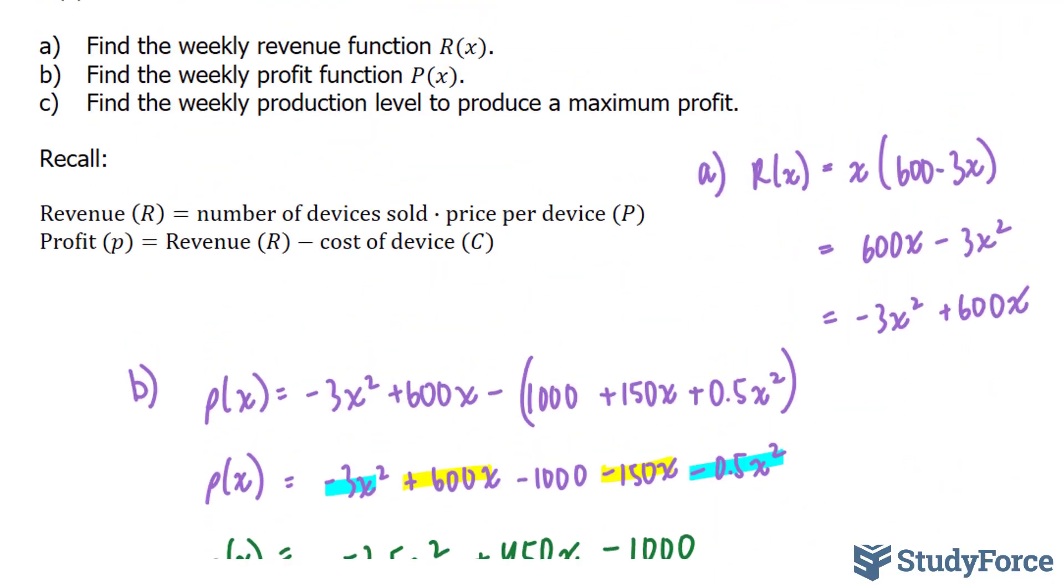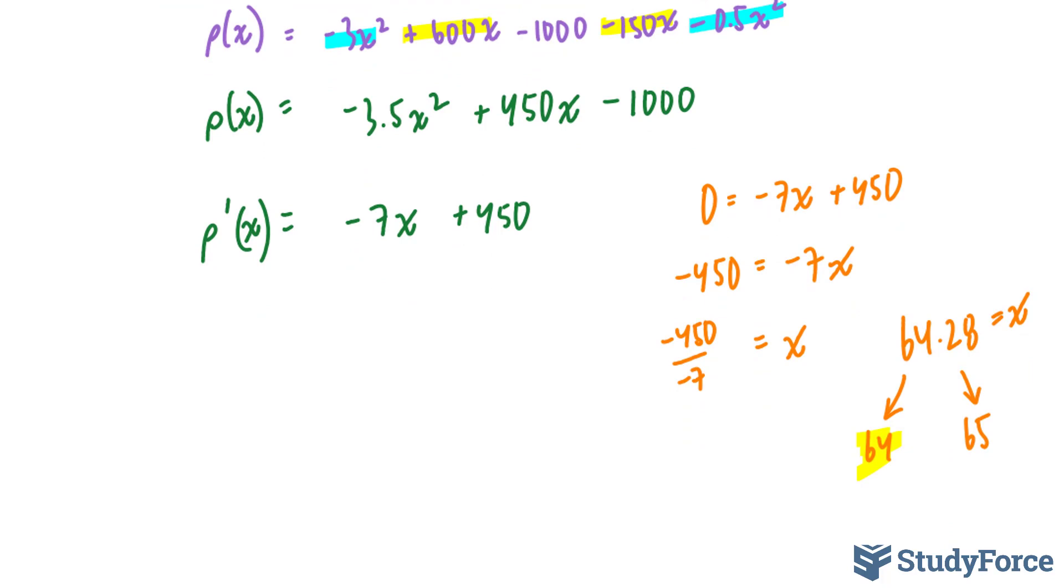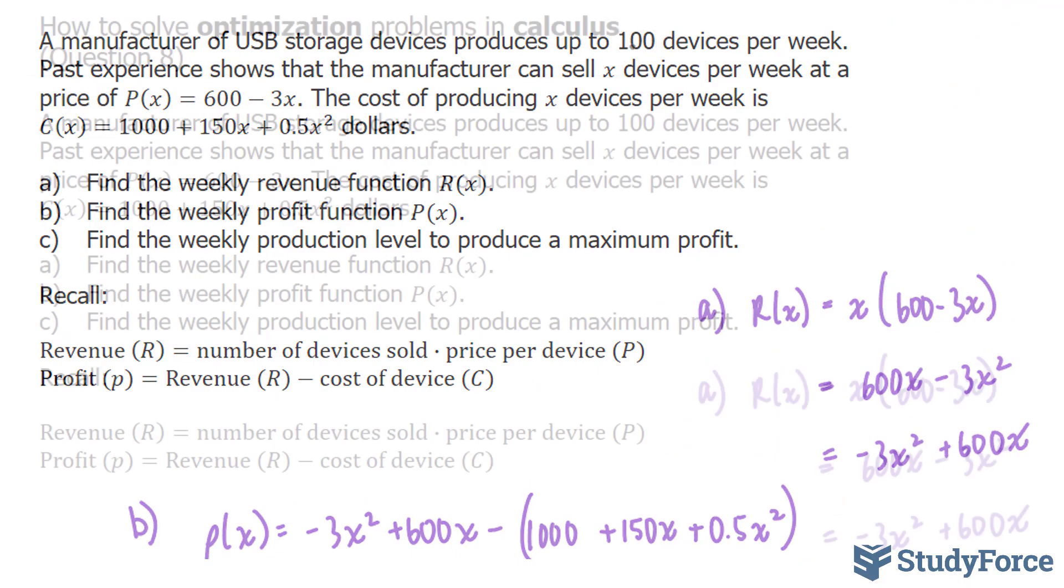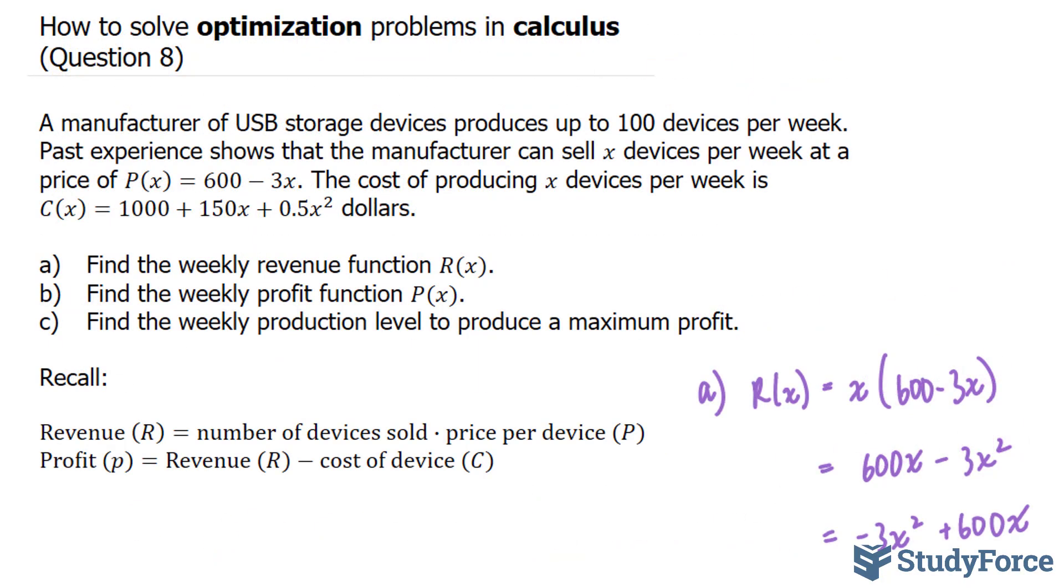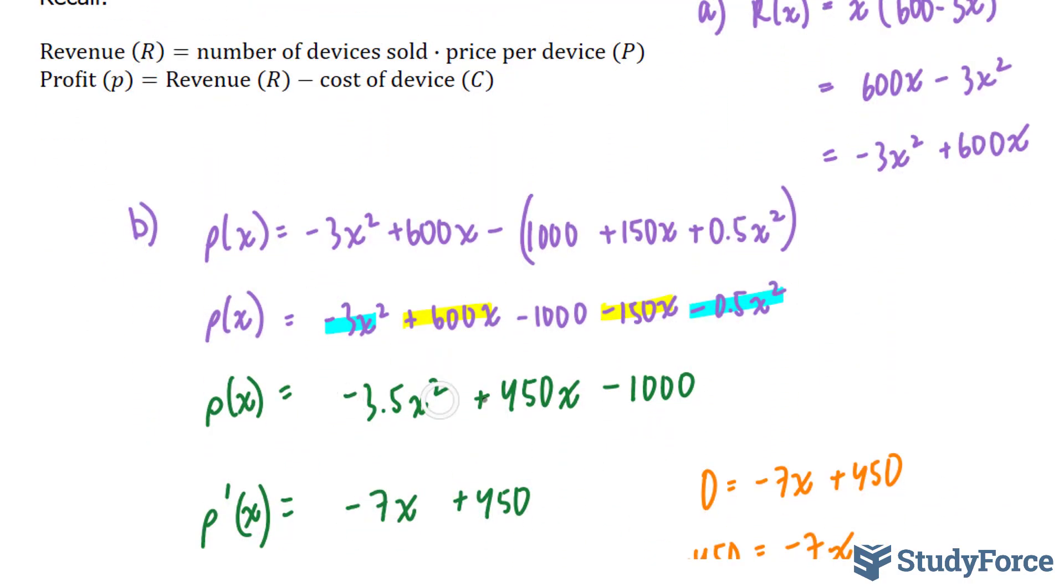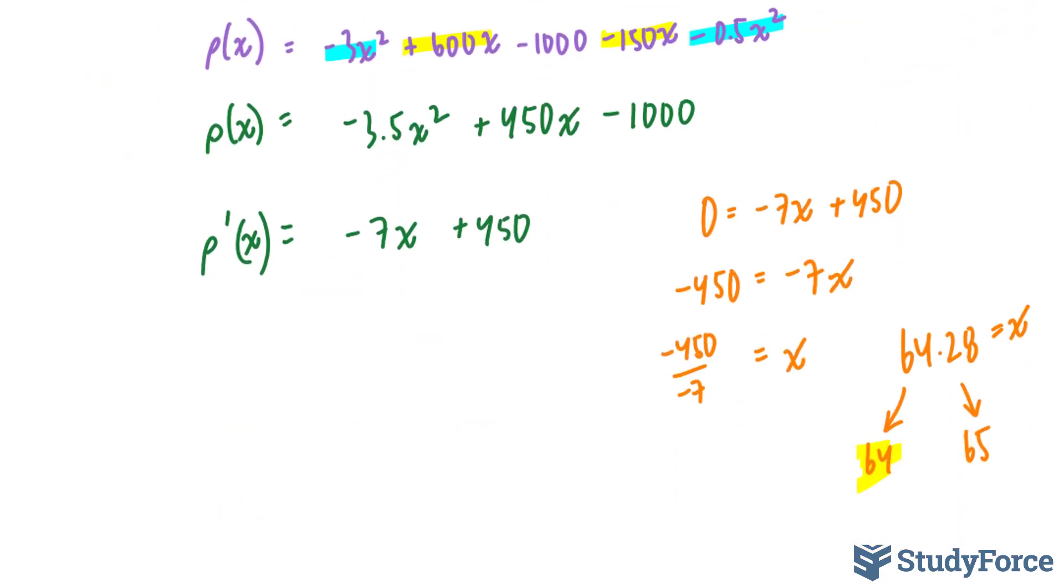So now that we've found our critical point, what we have to do for Part C is prove that this will produce the maximum profit. So by producing 64 USB devices, this will ensure that a profit is maximized. But how do we prove this? Well, what you have to do is look at the restrictions. We were told that the manufacturer can produce up to 100 devices per week. So our next step is to substitute 0, 100, and the number 64 into our formula for profit, which happened to be this one right here. And let's see what happens to our profit at each one of those points.